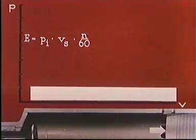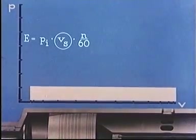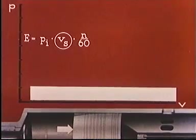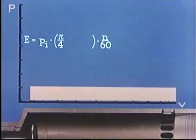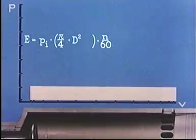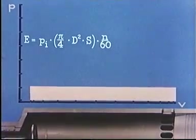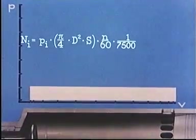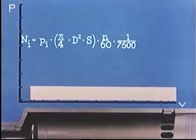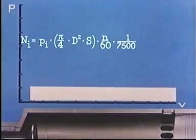There is one working stroke in each revolution, so if we multiply by the revolutions per second, N over 60, we get the work in kilogram centimeters per second, that is to say the power. Instead of VS, we substitute the piston area multiplied by the stroke length, that is PI over 4 multiplied by D squared multiplied by S cubic centimeters. To arrive at the output in horsepower, 75 kilogram meters per second, we have to divide by 7500, and we thus have the equation for computing the horsepower developed in each cylinder of the engine.